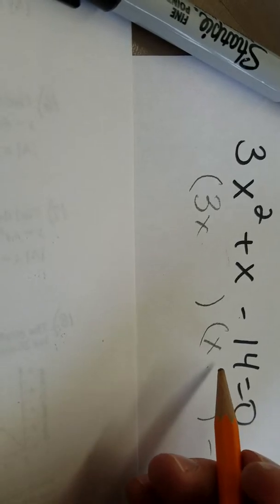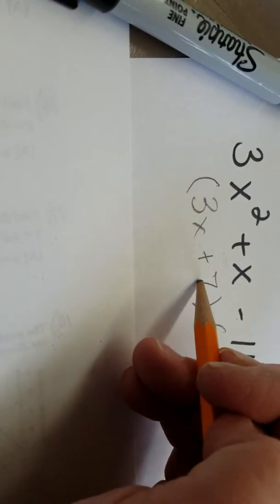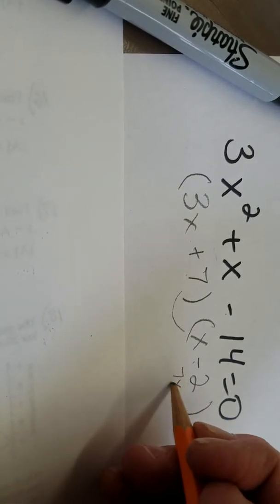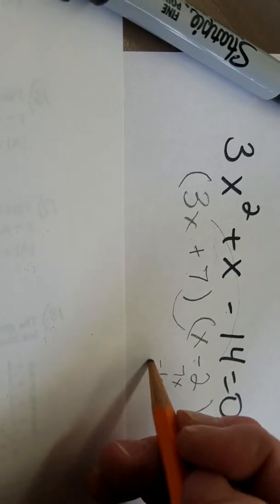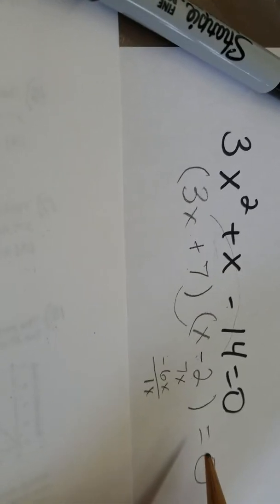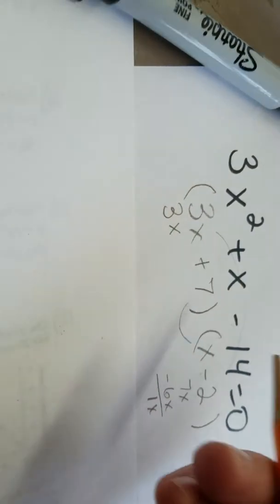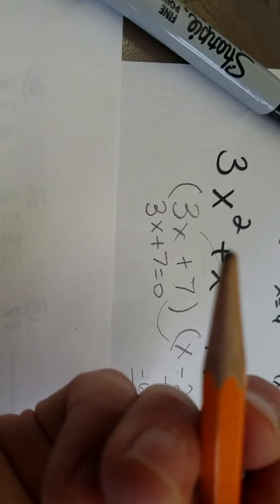So I'm going to try out a positive 7 here and a negative 2 here because that will indeed give me negative 14. But let's see if I get a positive 1. Well, 7 times x is 7x, negative 2 times 3x is negative 6x, and that's a 1x success. It's not an exact science, it's just kind of a trial and error. My pencil sharpener is broken here. It's almost dead.